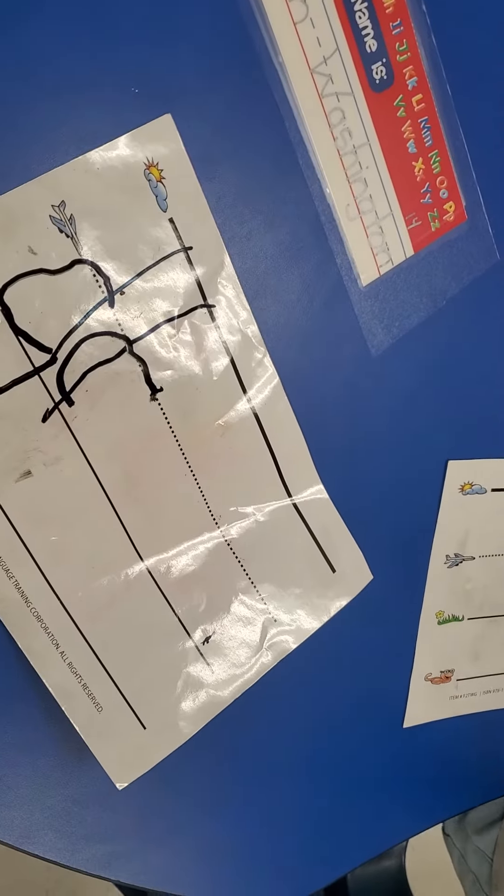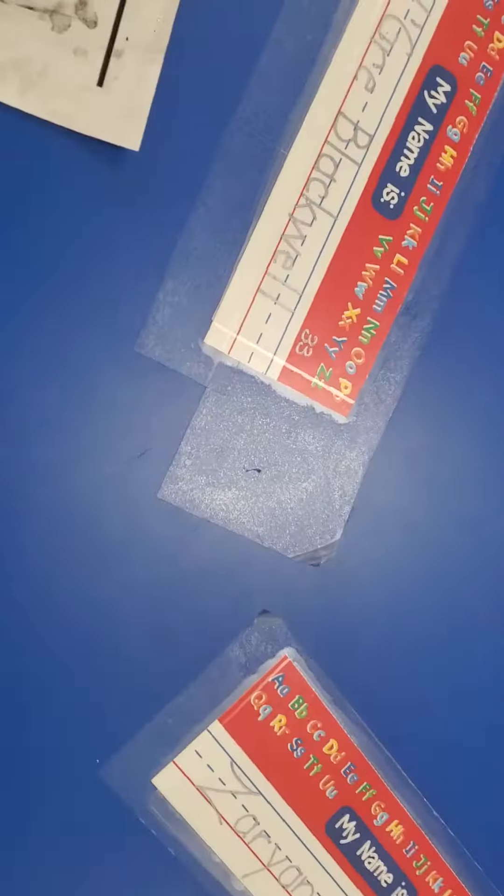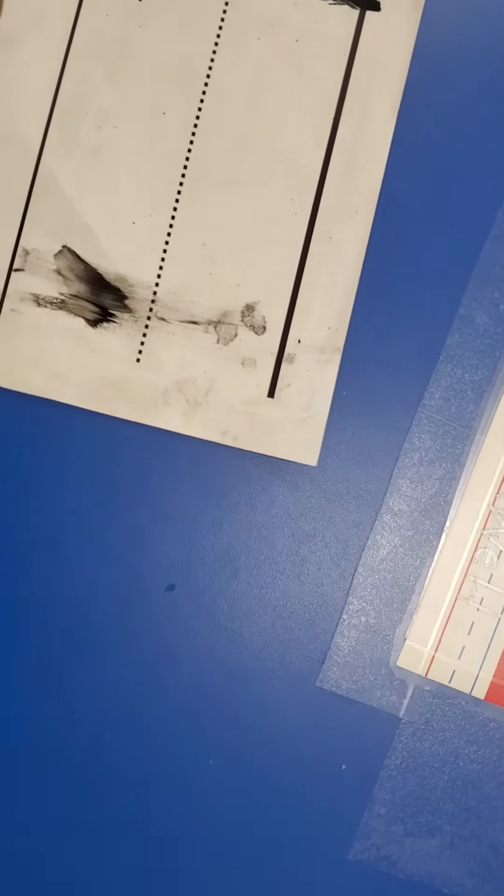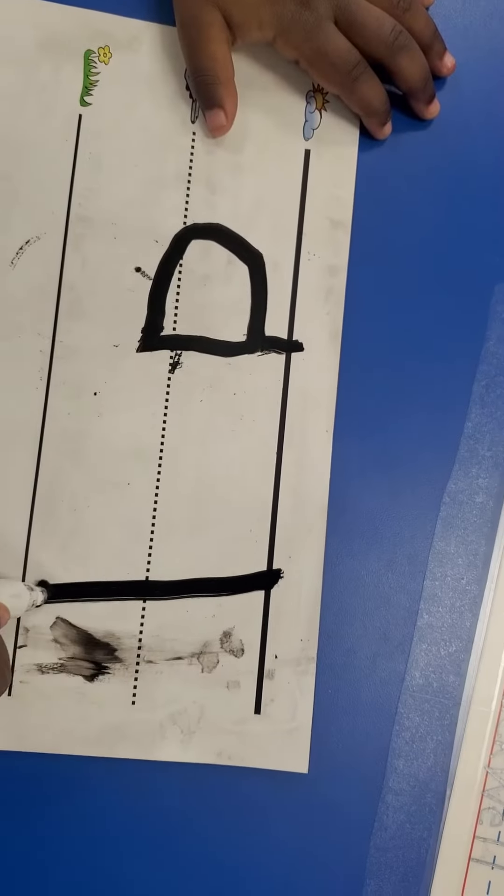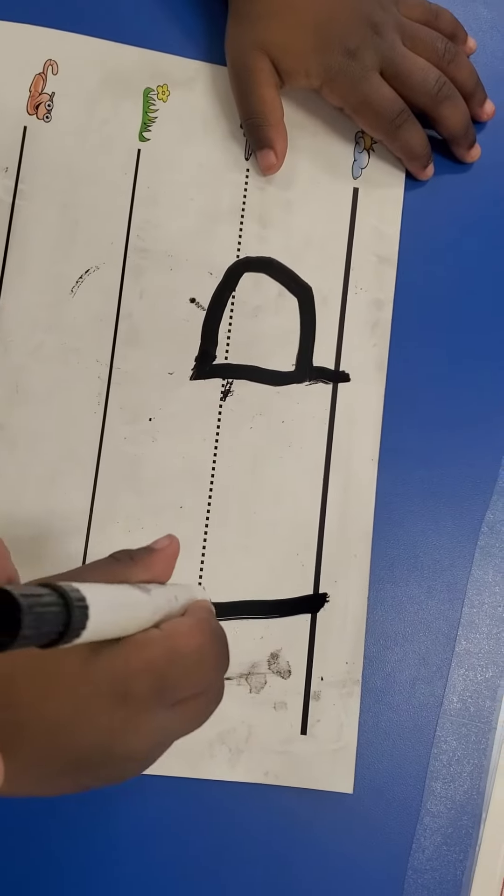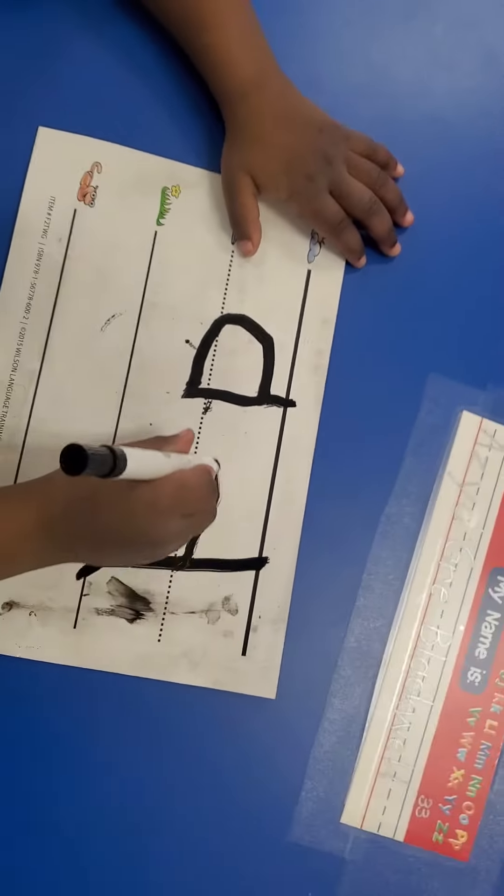D, dog, duh. Now let's take that line all the way down to the grass like we were supposed to. Supposed to take it all the way down to the grass. Then we're supposed to put our pencil where? Right there and go to the left.